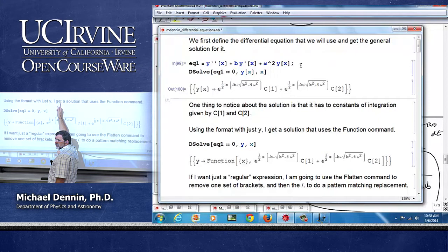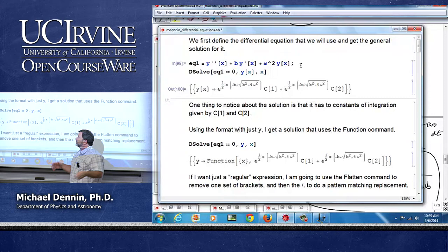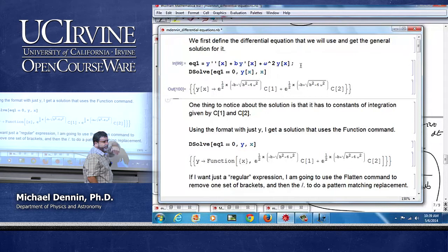When you use DSolve, you need to tell it y of x is what I'm solving for and x is the variable. And then it'll give you, just like it always does, a rule for y of x. And it's in a double bracket because it might have had more than one solution. So it's a list of solutions. And it gives you the constants of integration using C1, C2.